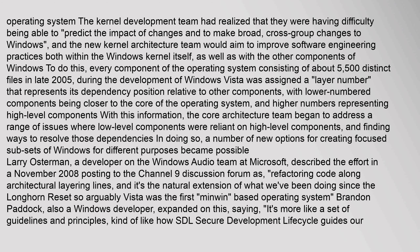To do this, every component of the operating system — consisting of about 5,500 distinct files in late 2005 during the development of Windows Vista — was assigned a layer number that represents its dependency position relative to other components, with lower numbered components being closer to the core of the operating system and higher numbers representing high-level components. With this information, the core architecture team began to address issues where low-level components were reliant on high-level components, and finding ways to resolve those dependencies made a number of new options for creating focused subsets of Windows possible.